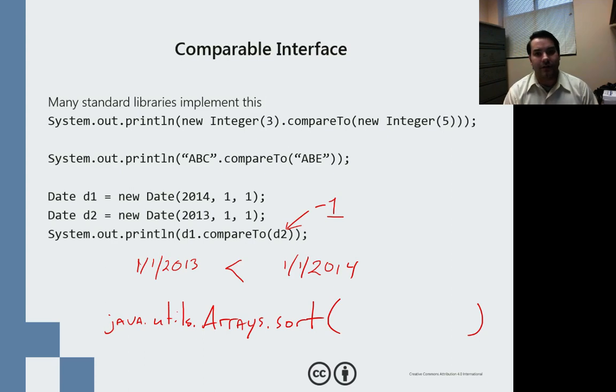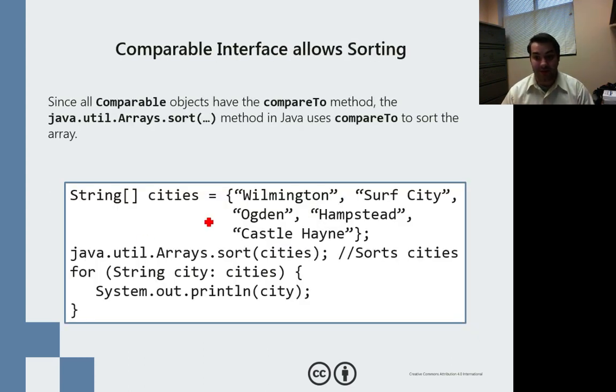But what about our now complex data types? We're talking about dates here, so how would I do this? Well, guess what? If I happen to have a bunch of complex data types and I want to use something like sort,